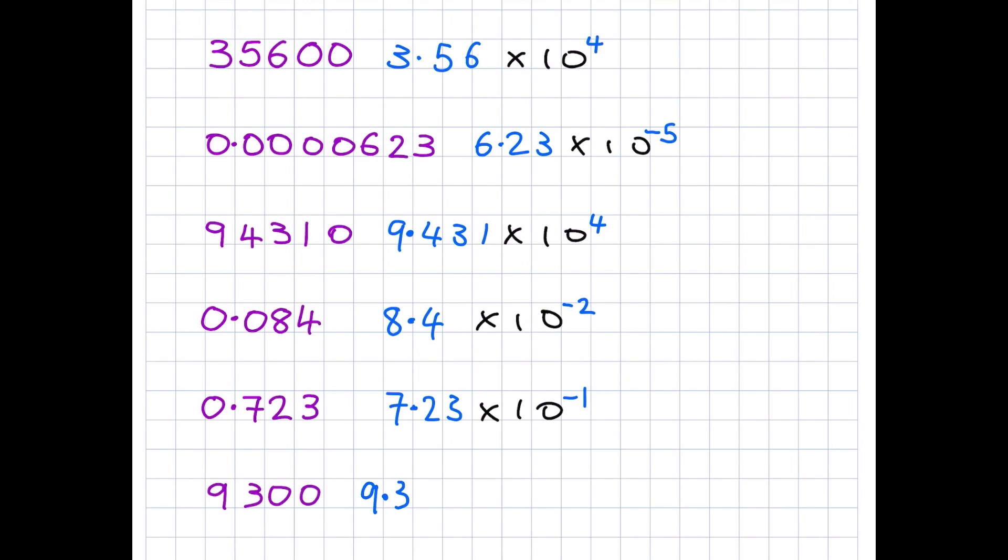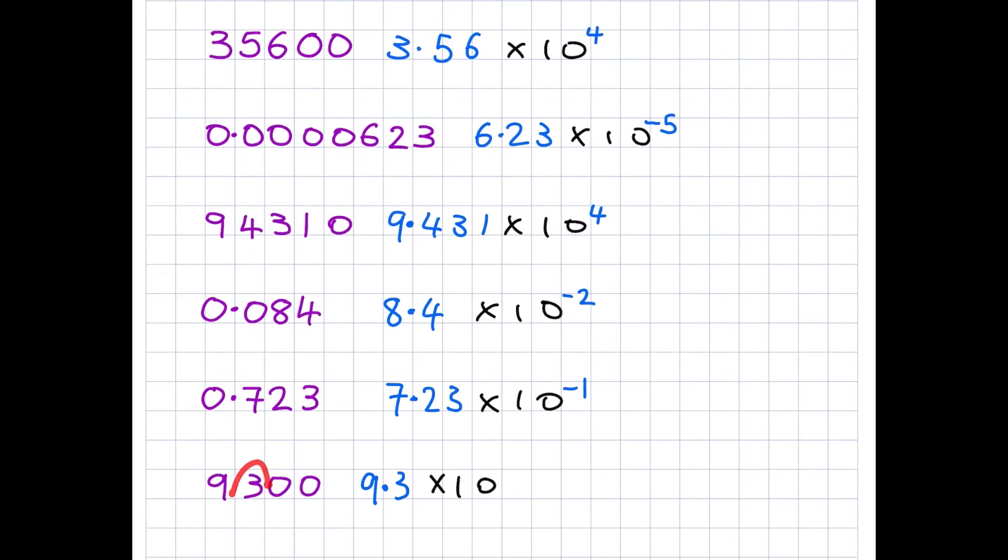Now we have made this number much smaller than the original. So to make this the same number as the original, we need to multiply it by 10 to the power of 1, 2, 3. Again, well done if you got that right. But if you didn't, don't worry about it. You're learning just by having a go.